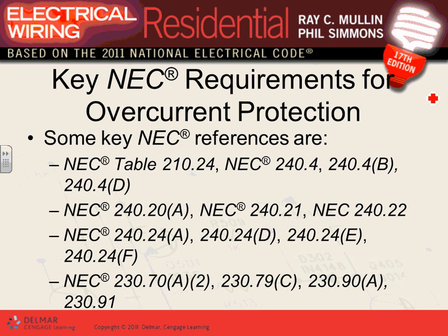There are several articles about overcurrent protection devices. Section 210.24 covers the maximum overcurrent protection device for branch circuits — like 15-amp and 20-amp circuits based on conductor size. Section 240.4 tells you to size your overcurrent protection device based on the ampacity of the conductor.